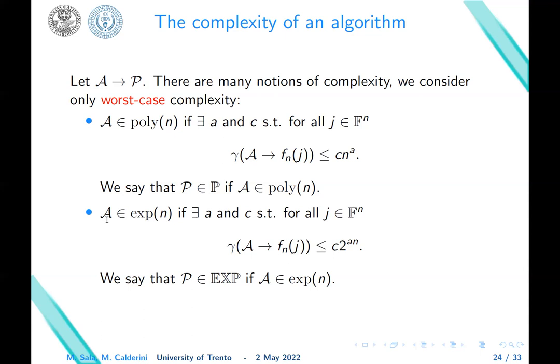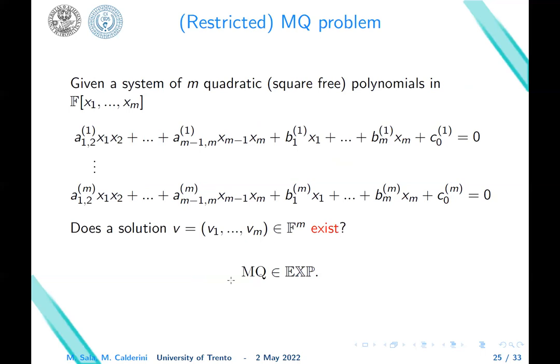On the other hand, we could have an algorithm that needs exponential time. We say that A is in exp(n) if every time you use this algorithm to compute f_n(j), this can be bounded by c^(a·n), where n is the bit length and c and a are constants. If we have that A solves P and A is in exp(n), then we say that P is in EXP. Of course, everything that can be solved in polynomial time could also be solved in exponential time, so P is included in EXP. And we can prove that there are problems even more than EXP, but we don't need that for our lecture.